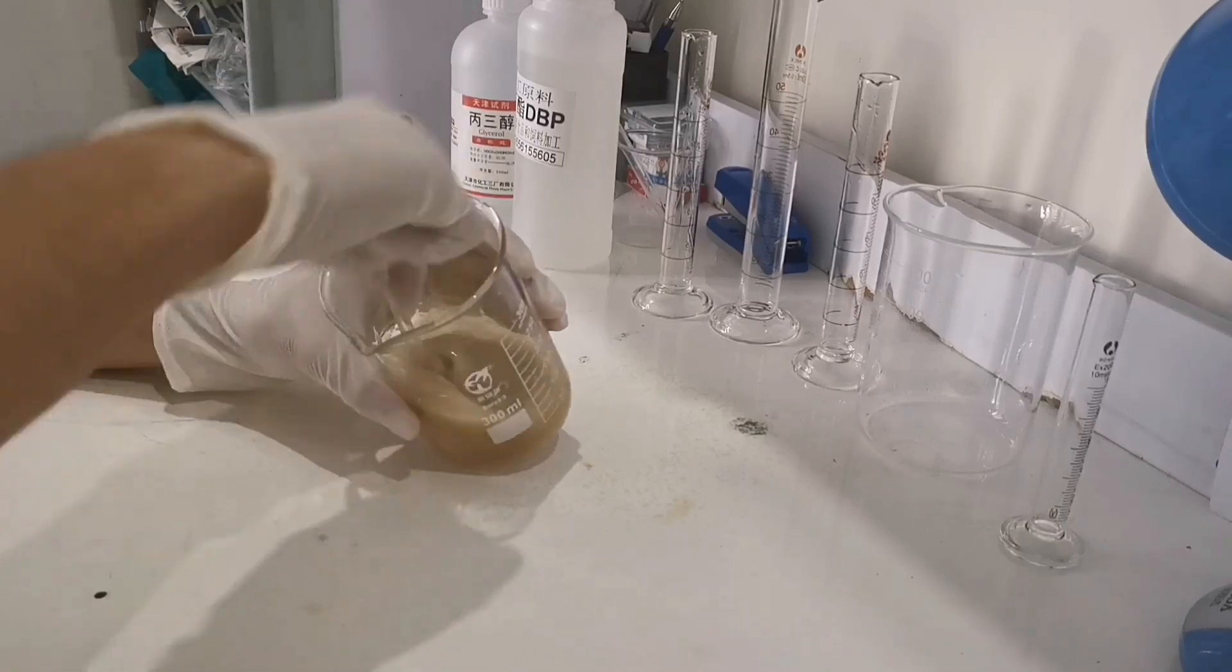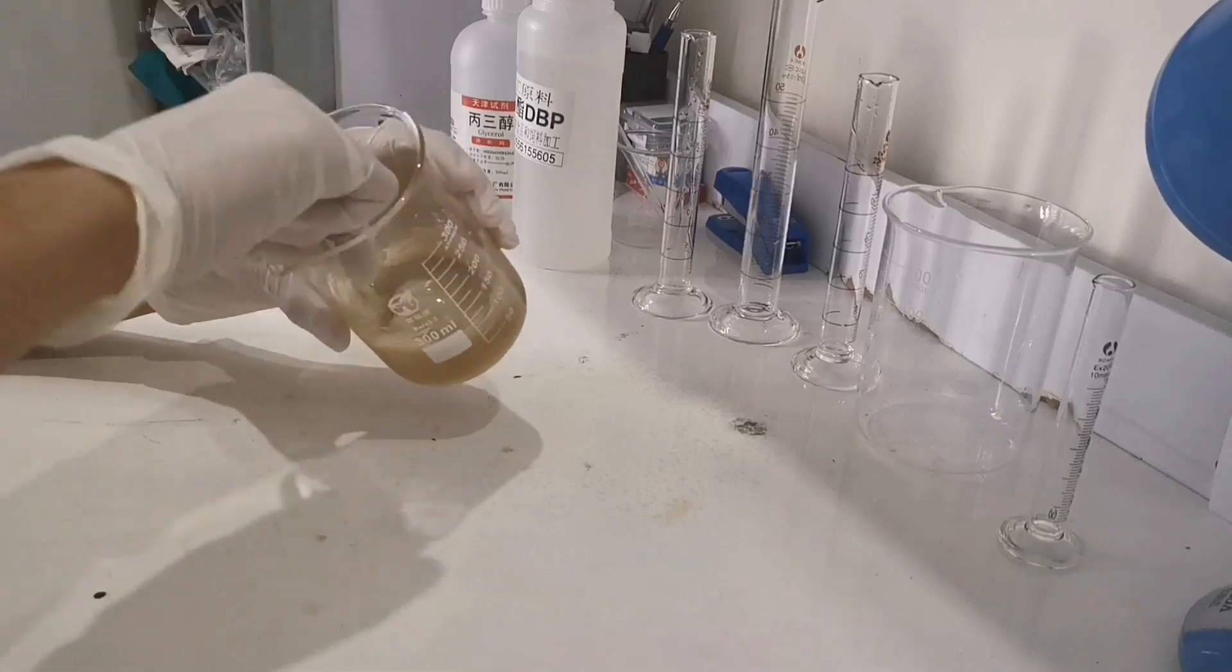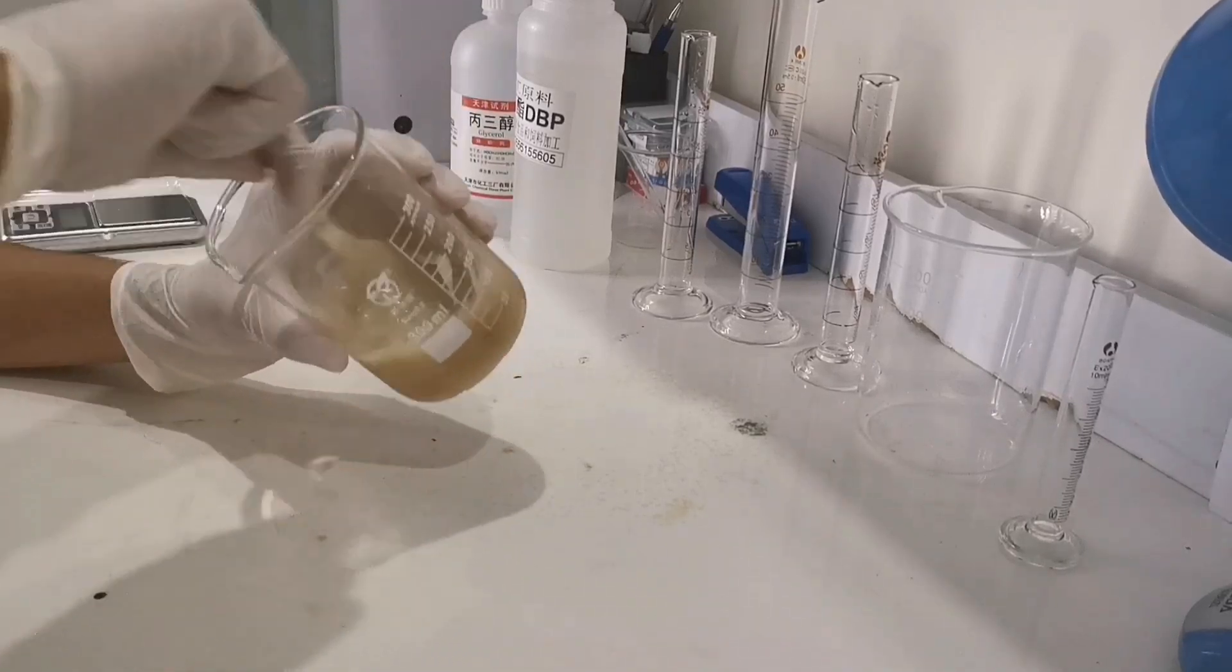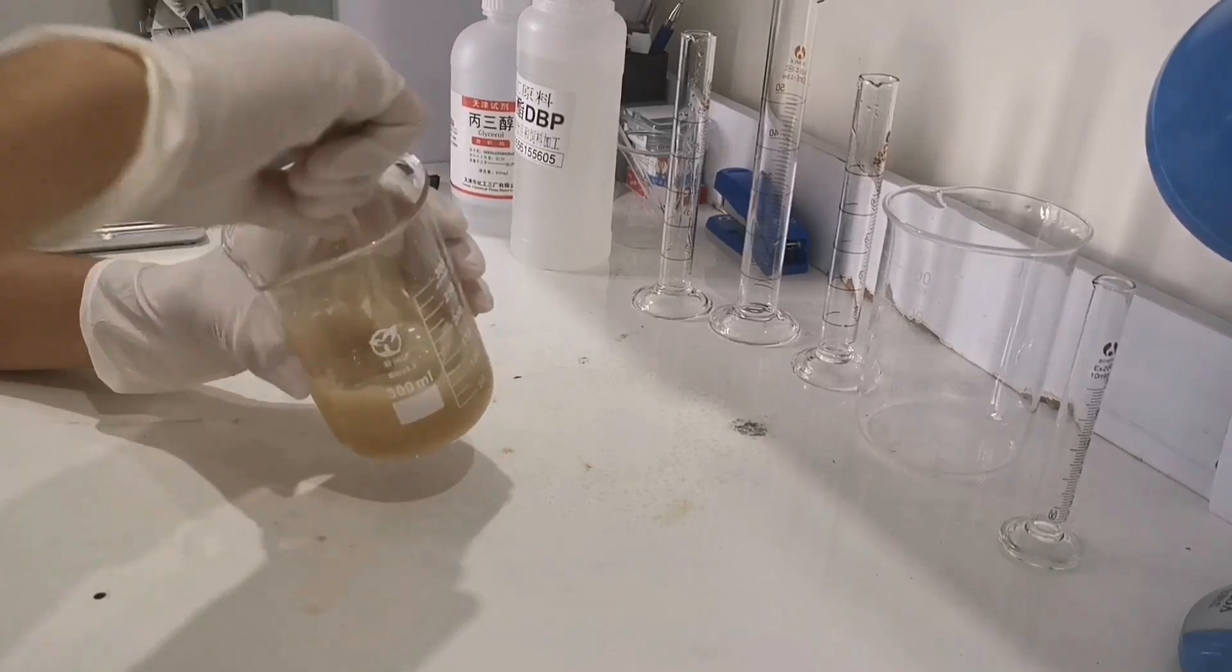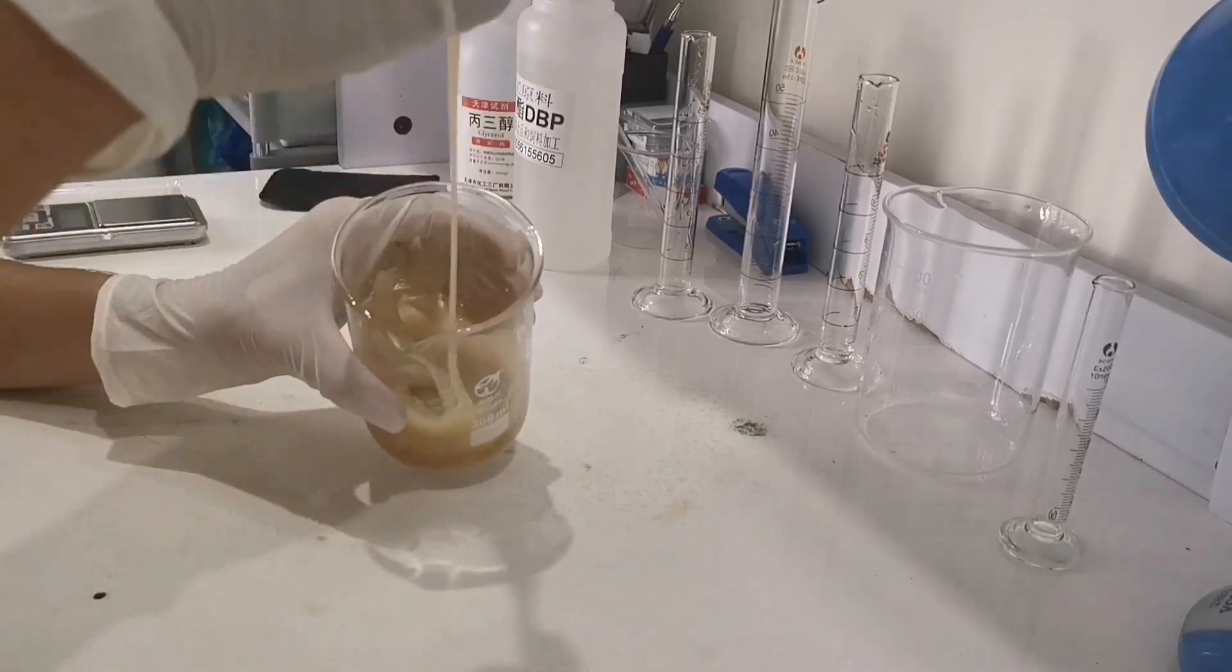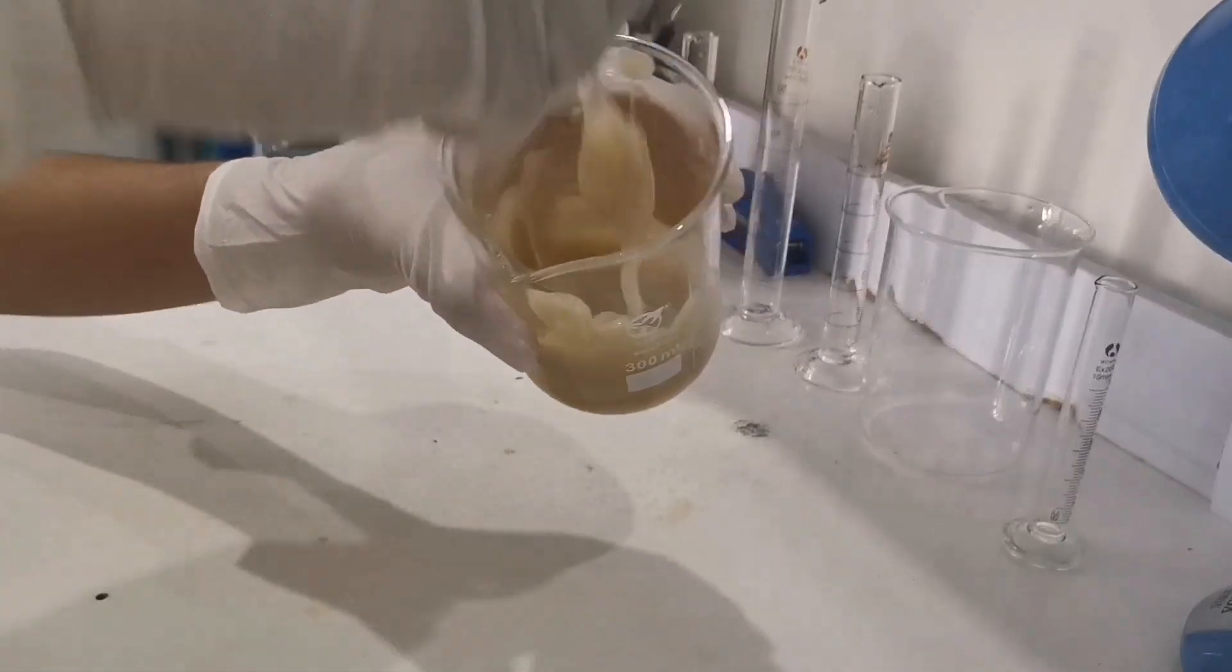The good thing about using DBP instead of glycerin is that it can help the solution to be softer when it gets hard. After a good stirring, you will see the color of the solution gets brighter. If you can play your solution like this, it means that you got a very successful solution.